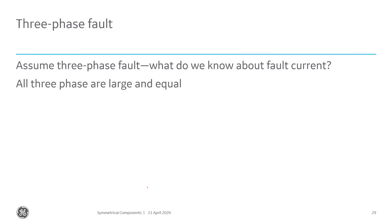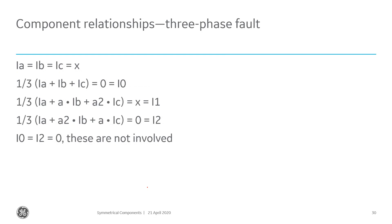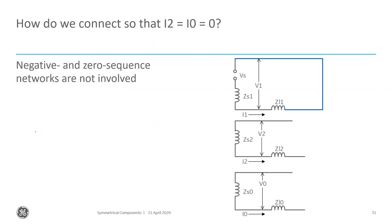For a three-phase fault, all currents are very large and equal. I-zero is zero, I-1 equals X, I-2 is zero — it's a balanced fault. Zero sequence and negative sequence currents aren't involved, so those networks aren't connected. For a balanced three-phase fault, only positive sequence currents flow and only the positive sequence network is involved. This is also what we expect for normal balanced load conditions.